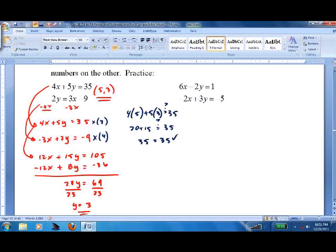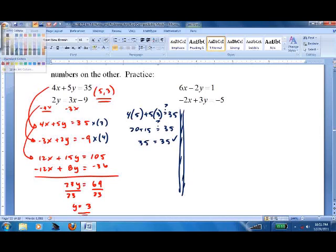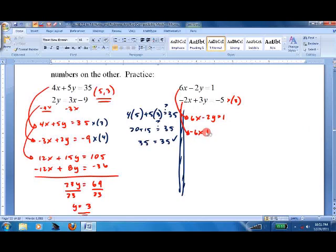Now, this one, the next one here, don't really have to mess with it. The variables are lined up. The top one has 6x. The bottom one is negative 2x. If I multiply the bottom one by 3, I should be good to go. So I'll just bring this one down. 6x minus 2y equals 1. Let's multiply this one by 3. Negative 6x plus 9y equals negative 15. These cancel.